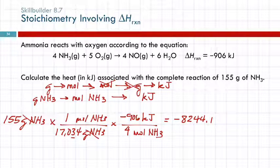This gives me negative 8244.1 and a bunch of zeros. The unit is kilojoules. How many significant figures? Three. So my starting mass only has three significant figures. My enthalpy of reaction only has three significant figures. This is not an exact number. Those are measured. So I need three significant figures.